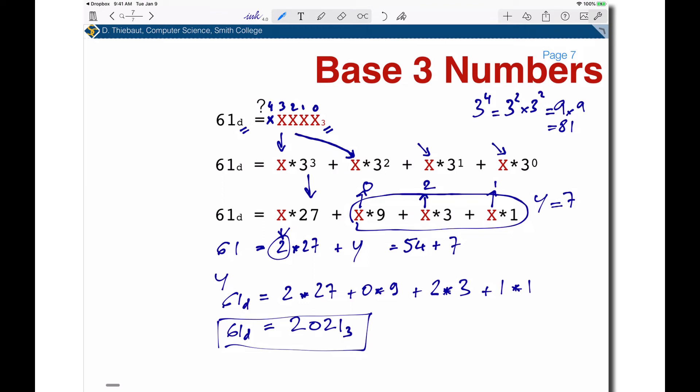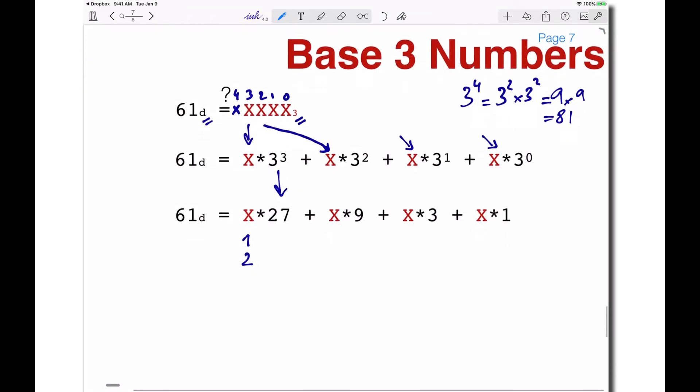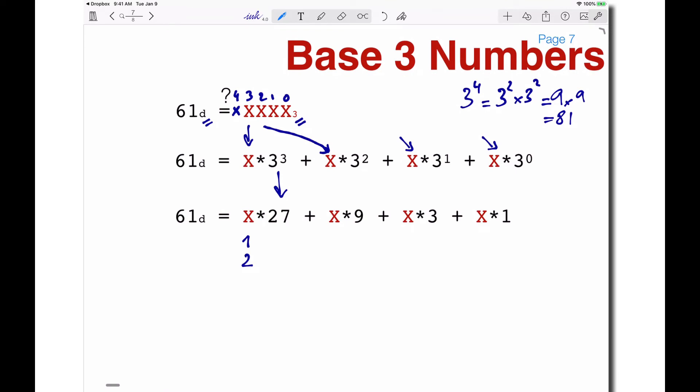Let me redo this very quickly to make sure we all get it. The leading digit could be 1 or 2. Since 1×27 = 27 < 61 and 2×27 = 54 < 61, the leading digit is 2.